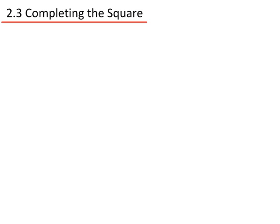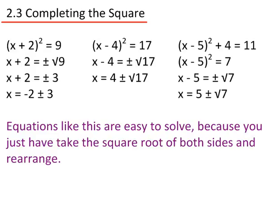2.3 Completing the Square. From our earlier video on solving equations by factorisation, we showed that x plus 2 squared equals 9 is easy to solve because all we have to do is take the square roots of both sides and rearrange. The idea of completing the square is to get equations into this format to make them easy to solve.